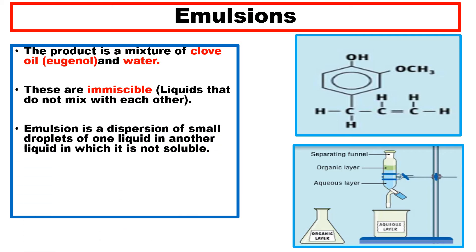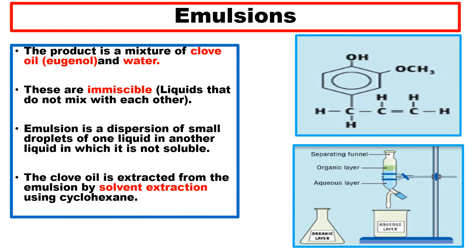The product is a mixture of clove oil — also called eugenol — and water, which are immiscible and do not mix. An emulsion is a dispersion of small droplets of one liquid in another that does not dissolve. The clove oil is then extracted from the emulsion by solvent extraction, which is Part B of the experiment.